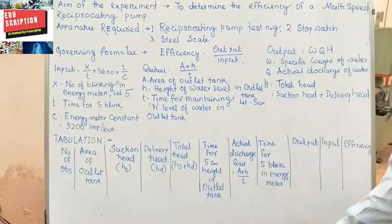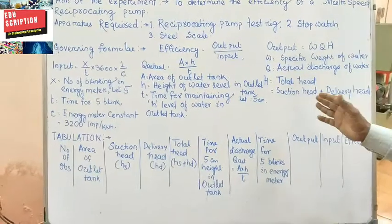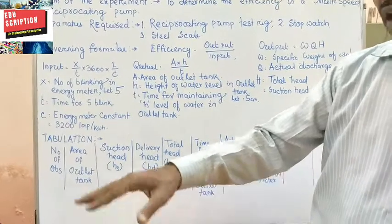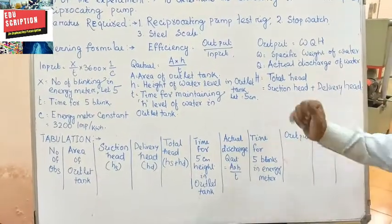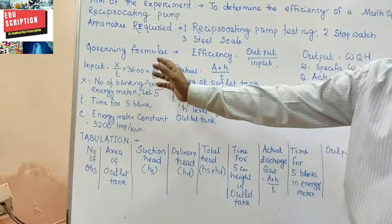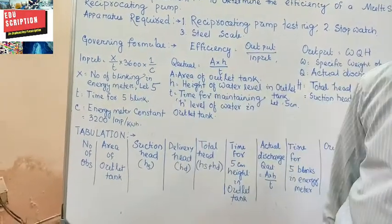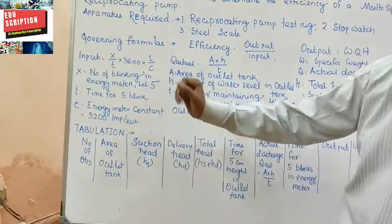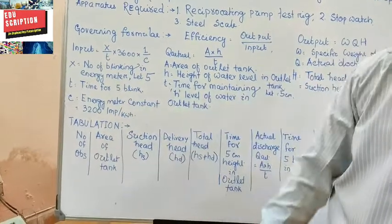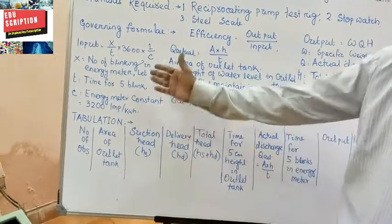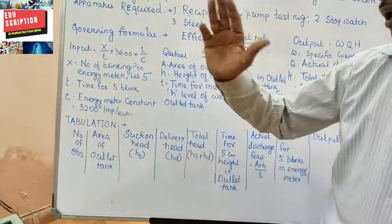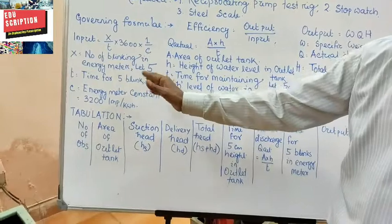H is the total head, meaning the sum of suction head and delivery head. For input, the formula is (x/t) × 3600 × (1/C), where C is the energy meter constant — 3200 impulses per kilowatt-hour — x is the number of blinks (5 blinks), and t is the time taken for those 5 blinks.